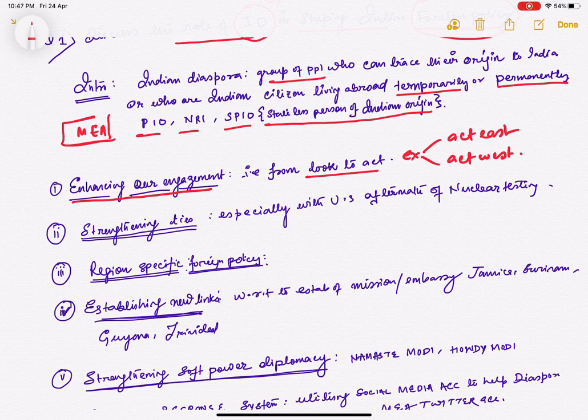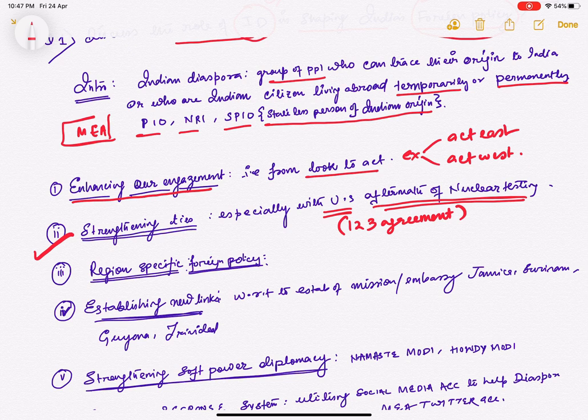Next, strengthening ties, especially with the United States. Example: aftermath of nuclear testing. Indian diaspora had been very successful in strengthening India's ties. One example was in the aftermath of the 1998 Pokhran testing when the US imposed sanctions on India. However, it was the Indian diaspora which lobbied in the US Congress in favor of India, as a result of which the US removed its sanctions. Apart from that, it even signed the 123 agreement, which basically allows the import of fissile material—nuclear material—from the US.